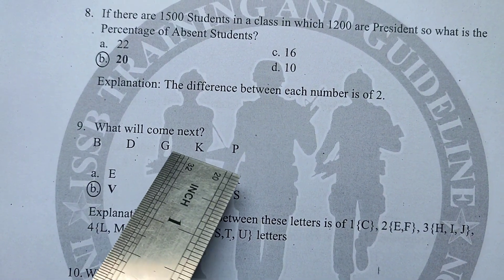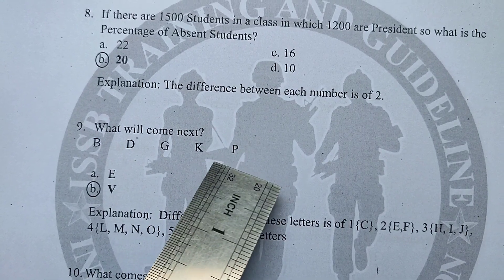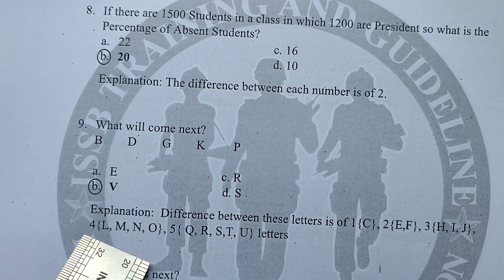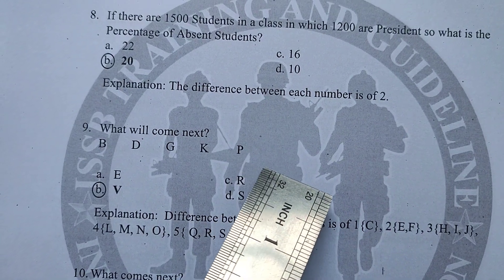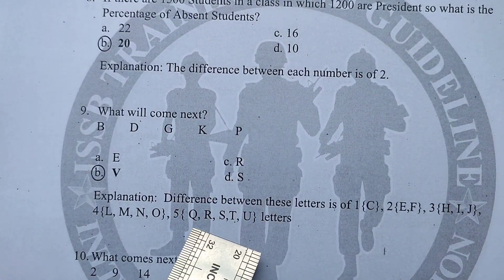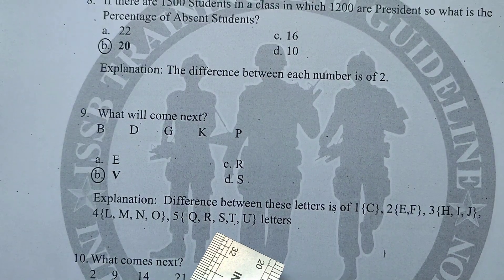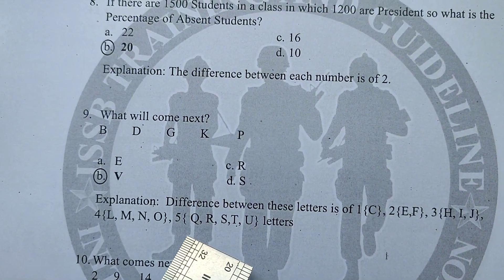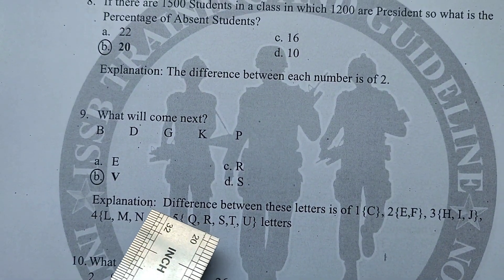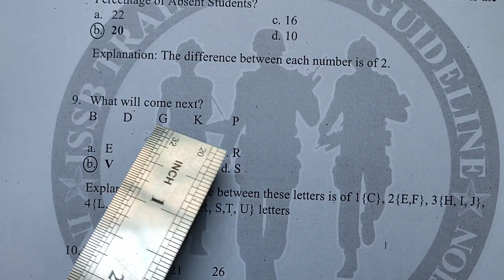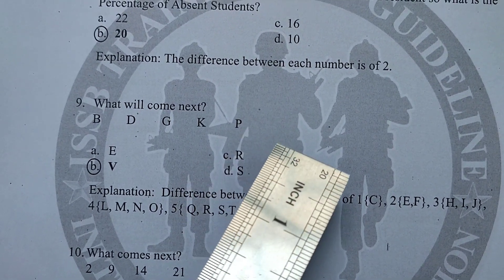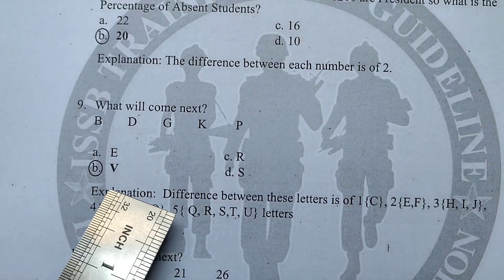The pattern is: C — skip 1 — then D, E, F (2 letters skipped before group of 3) — skip 2 — then H, I, J — skip 3 — then L, M, N, O — skip 4 letters — then P, Q, R, S, T, U — skip 5 letters. After skipping 5 letters (P through U), the next letter is V. So V is the answer. The number of skipped letters increases by 1 each time: 1, 2, 3, 4, 5.